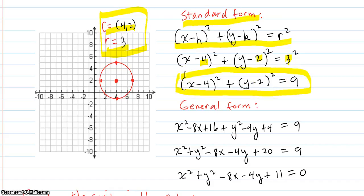If they ask for a general form, you start with the standard and just square these terms out. Then clean it up, subtract 9 from both sides, and you'd have this. So that would be the general form. And in another video, we're going to learn how to go from the general back to the standard, because that involves completing the square.